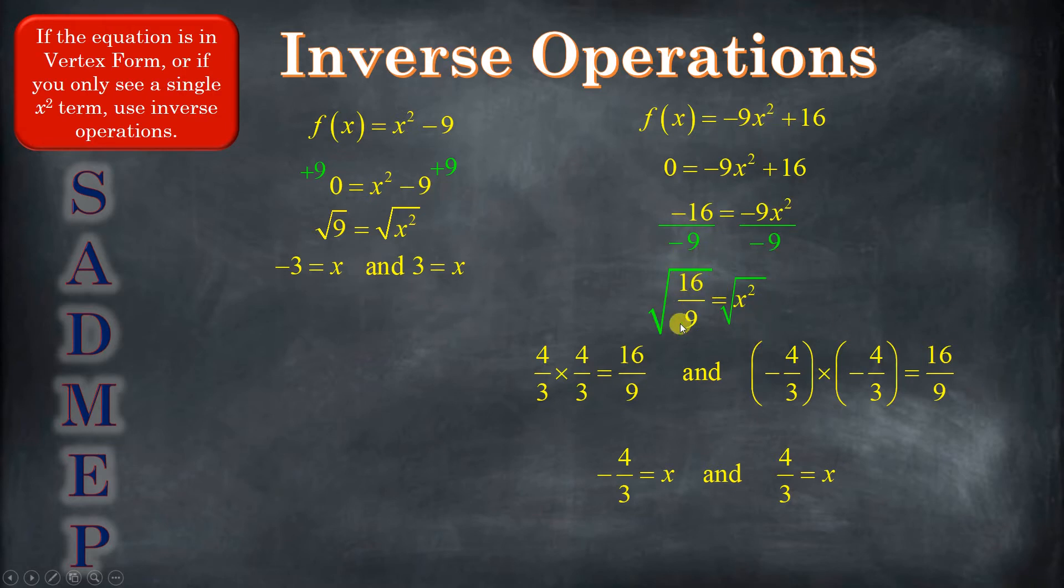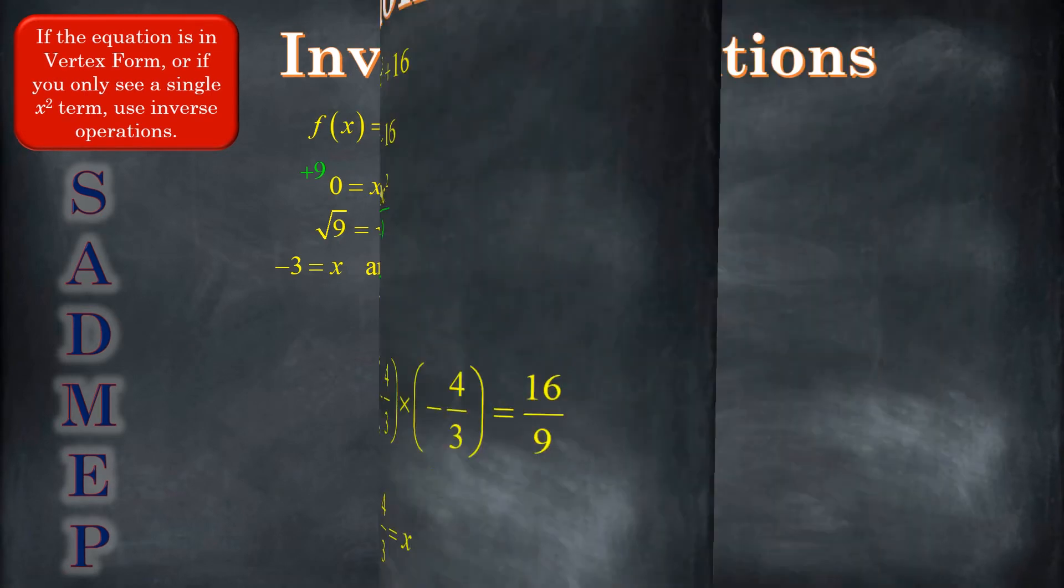It's also negative four-thirds because negative four times negative four is 16. Three times three is nine. So we have two answers. We have negative four-thirds, and we have positive four-thirds. So just using the inverse operations, good to go. Just be careful with this. It's not a huge deal. In this case, these were perfect squares so we could simplify them. If not, we just leave them as square root numbers like the square root of eight. Well, that could be simplified too, but it's not a perfect square. So you can't write it as an integer. No big deal. Let's see another example.